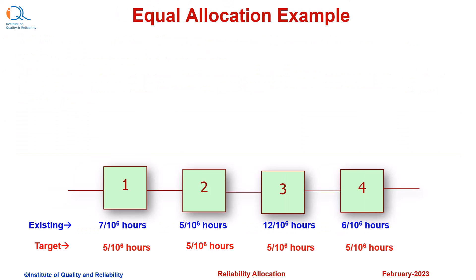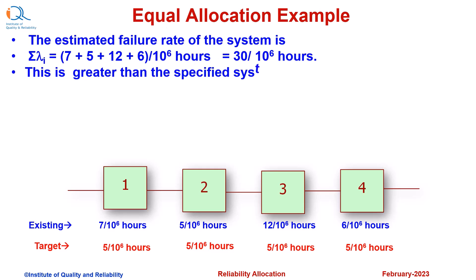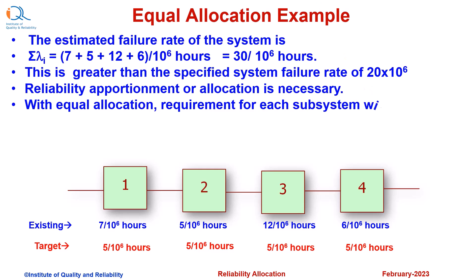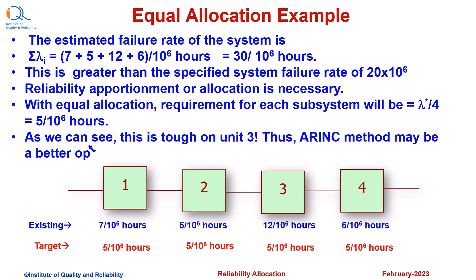The estimated failure rate of the system is 30 per million hours, which is greater than the specified system failure rate lambda star of 20 per million hours. Reliability apportionment or allocation is therefore necessary. With equal allocation, the requirement for each subsystem will be lambda star divided by 4, that is 5 per million hours. As we can see, this is tough on unit number 3. Thus, the ARINC method may be a better option for this allocation.